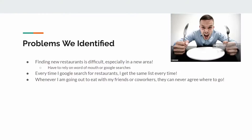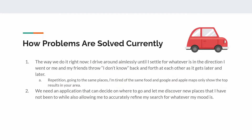When we were starting out our group, we first needed to identify problems. One of the problems we identified is that finding new restaurants is really difficult, especially in a new area. You have to rely on word of mouth or Google searches, and every time I Google search for a restaurant I get the same list every single time — it's always the top rated reviews for the area. Sometimes these new restaurants don't have a lot of Google reviews; they might have just opened up and I want to check these places out.